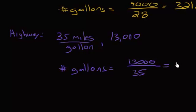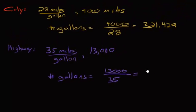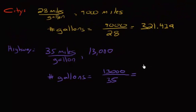so 13,000 divided by 35, and I get 371.429.